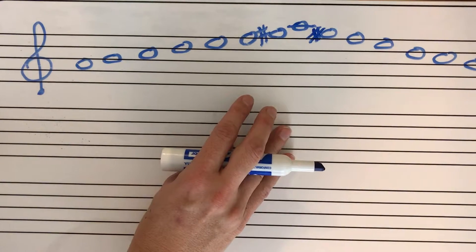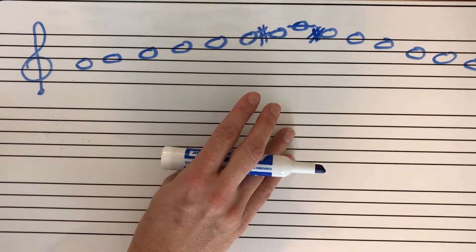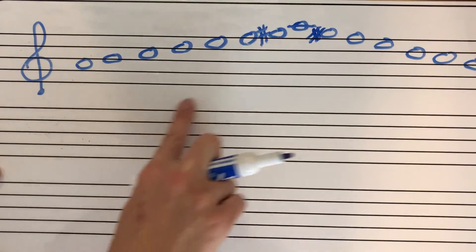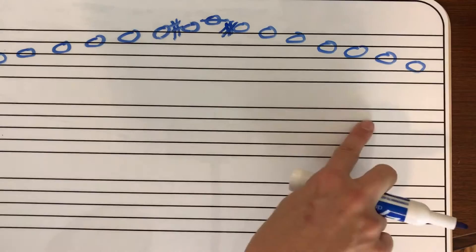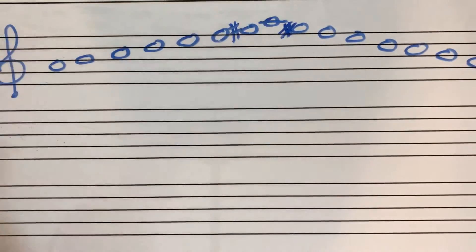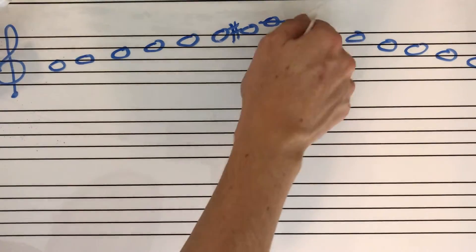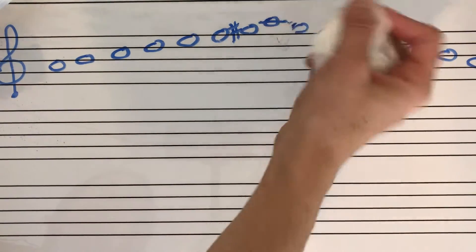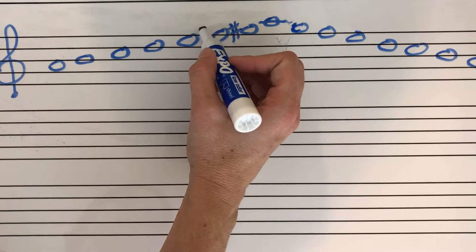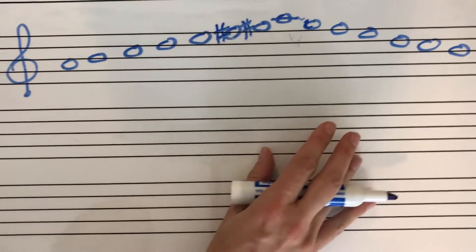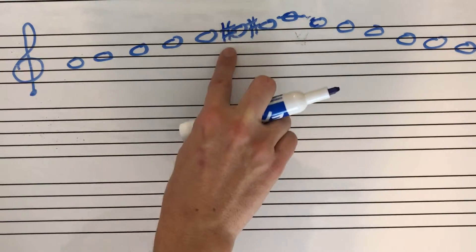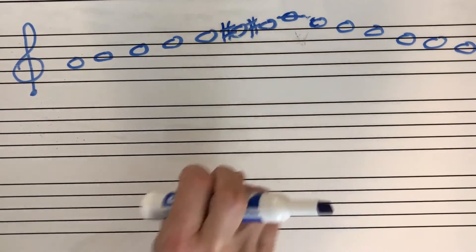Now we're going to talk about the melodic minor scale, which is a little confusing because the ascending scale — going up — is different from the descending scale — going down. On the ascending scale, I'm going to keep my seventh raised just like in the harmonic, but I'm also going to raise the sixth note. So I raise F to F sharp. My sixth and seventh are both raised on the way up.